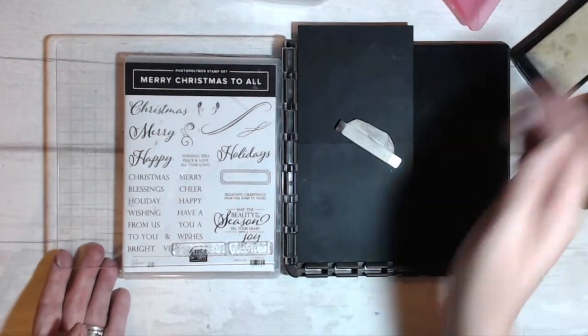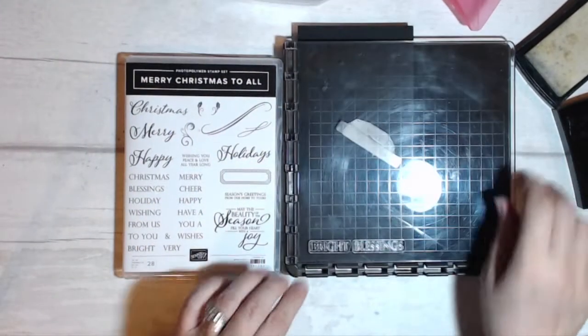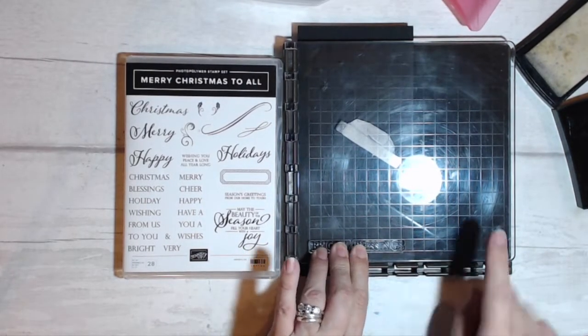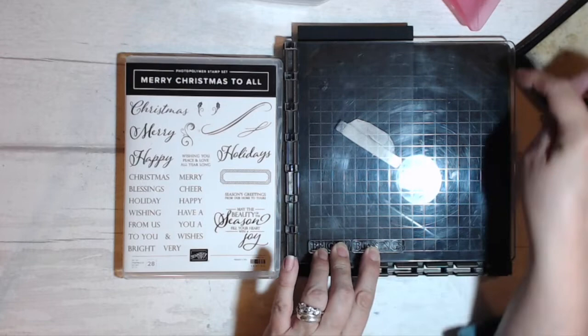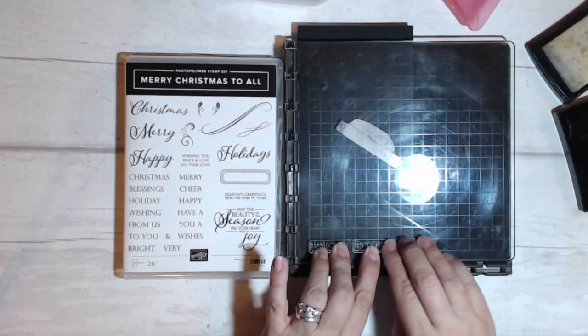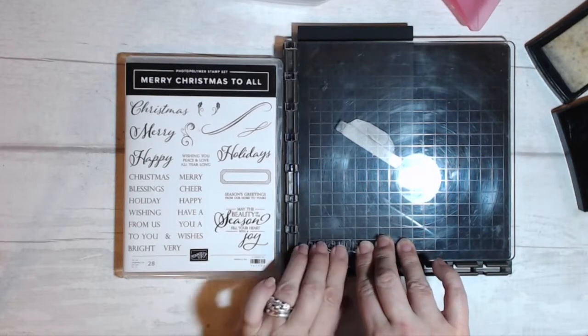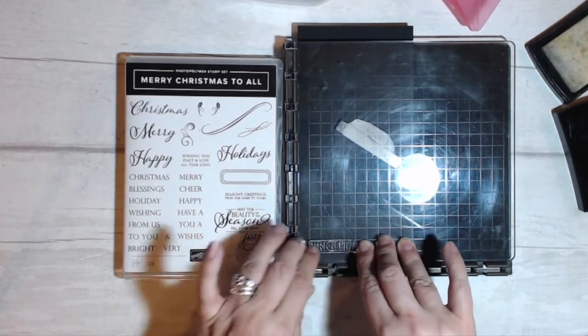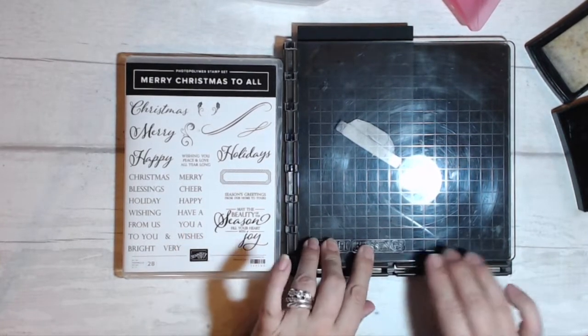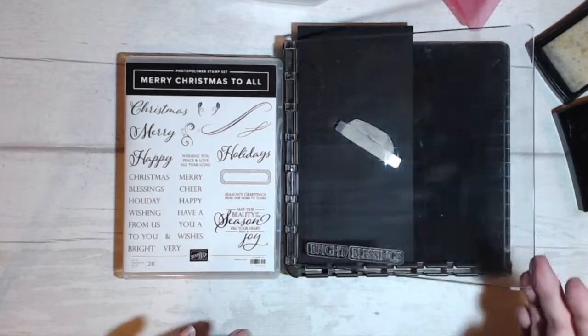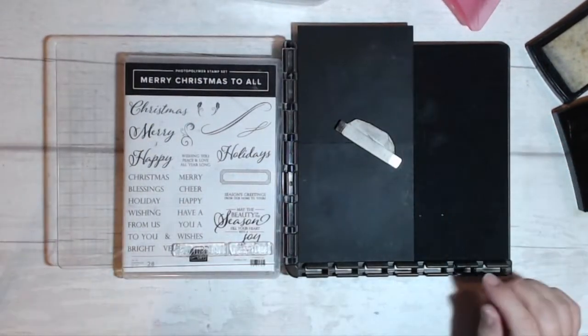There's a light tapping with the Versamark, bringing in the plates of the stamparatus and pressing down. Because these are photopolymer stamps, I've got my sponge mat on the base of the stamparatus, and I'm pressing down firmly and giving the ink time to transfer into my card. Let me move that away and let me just check.